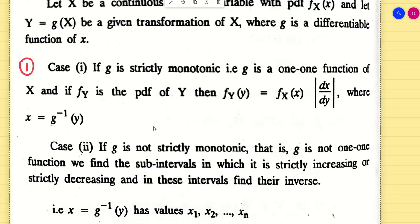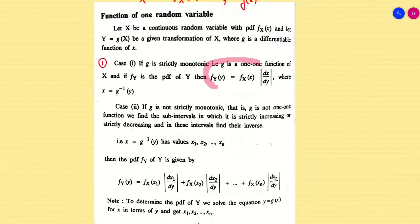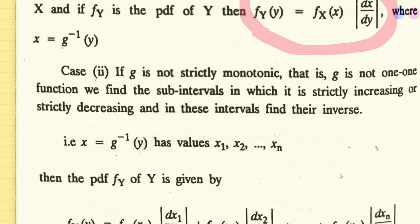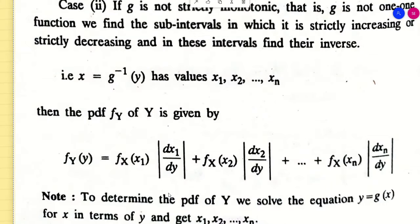The formula to find the PDF of y is f_Y(y) = f_X(x) · |dx/dy|. If g is not strictly monotonic, that is, g is not one-to-one, we have to solve the problem by splitting it into sub-intervals where it is strictly increasing or decreasing, and solve accordingly.